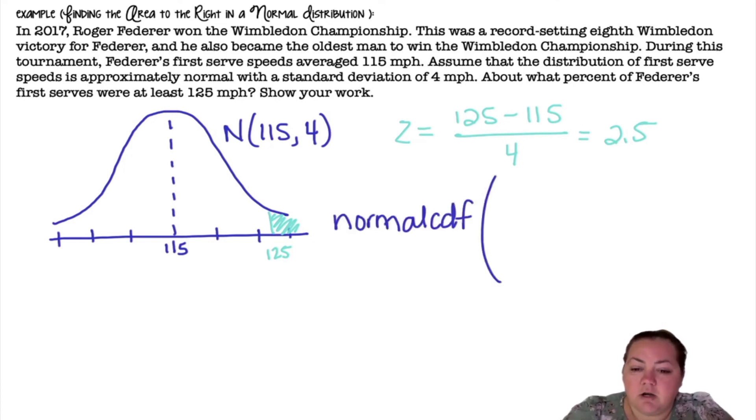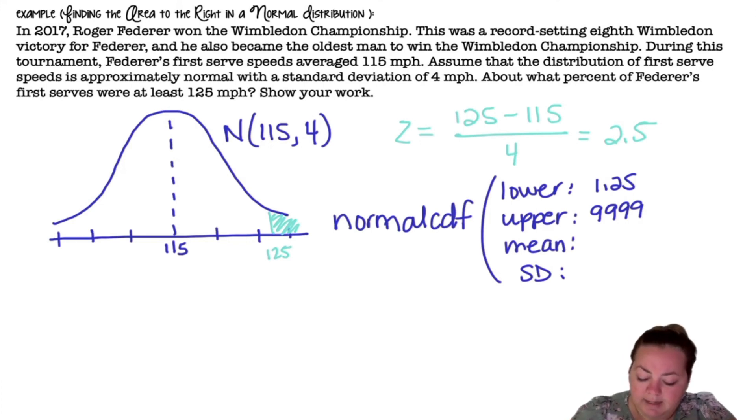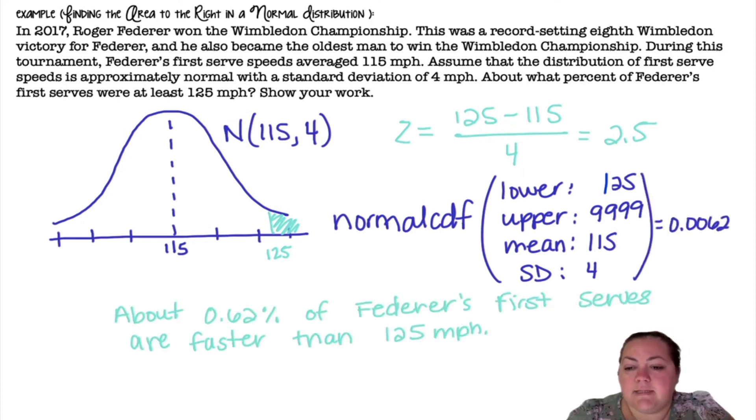If I use the calculator I'm doing a normal CDF. My lower bound this time would be 125. My upper bound would be 9999. My mean should be 115 and my standard deviation 4. When I put that in I get 0.0062. So about 0.62 percent of Federer's first serves are faster than 125 miles per hour.